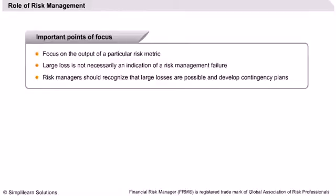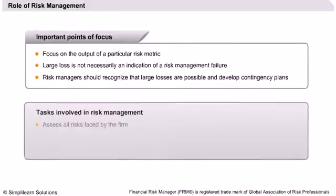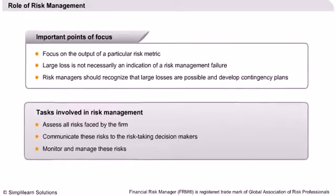Substantial financial measures in terms of allocating capital and proper contingency plans must be in place before such an event. Certain tasks that are involved in risk management are assessing risk from all directions and properly communicating these risks to the decision makers. Proper checks and measures must exist that monitor these risks and generate alarms in the event of any potential upcoming hazard.